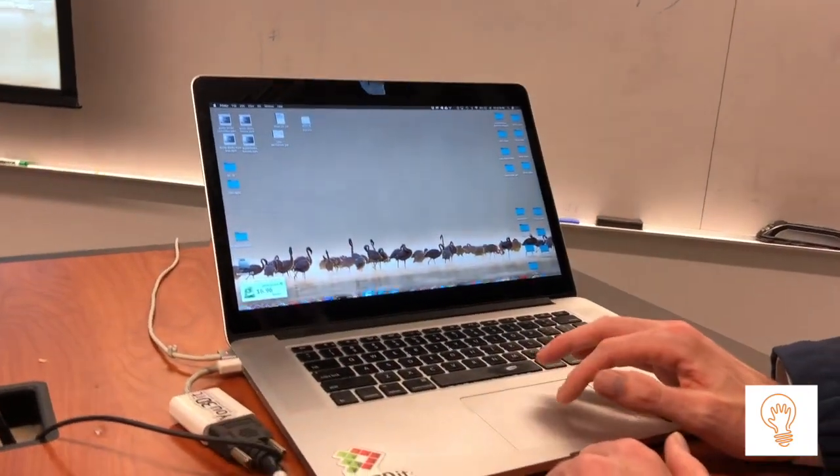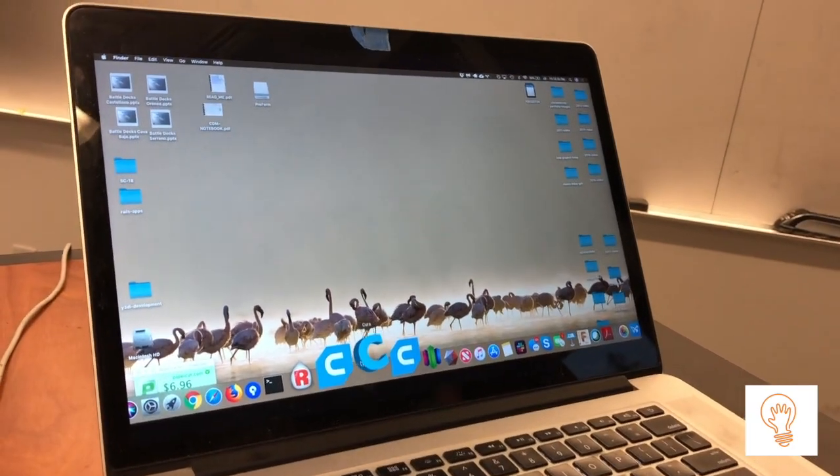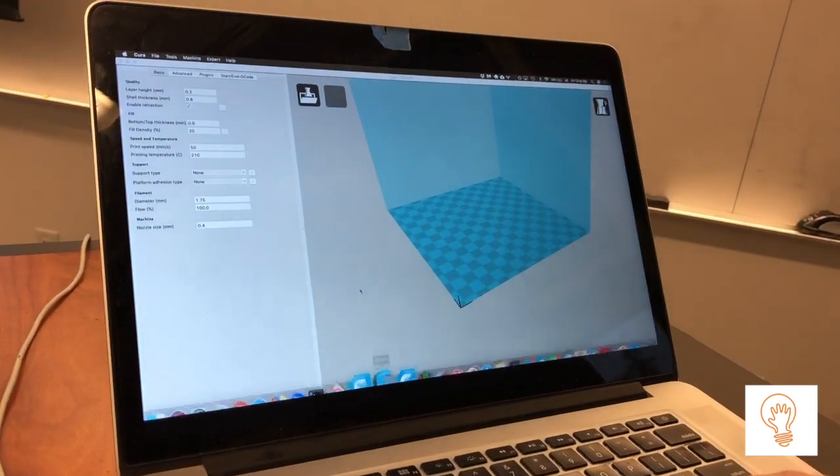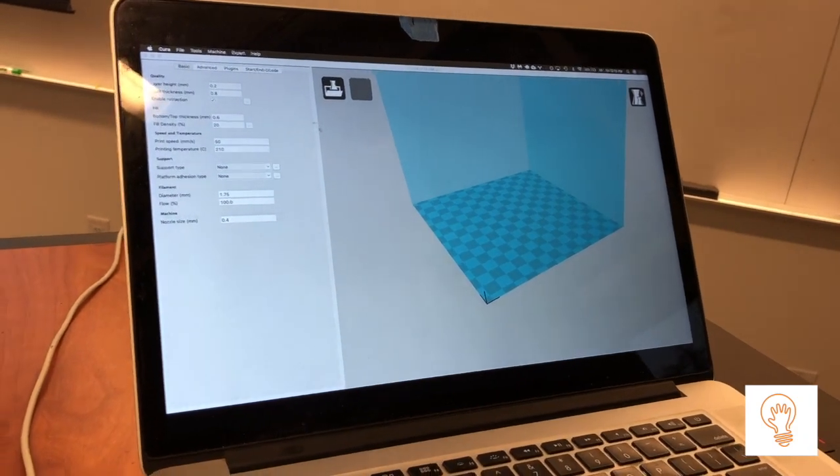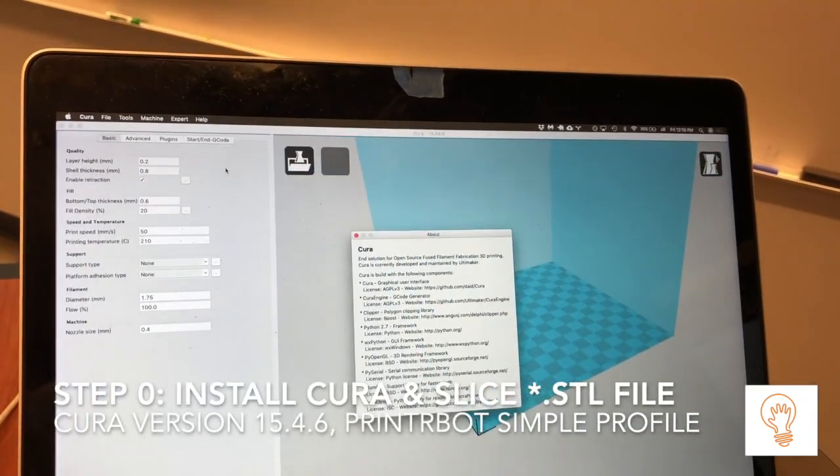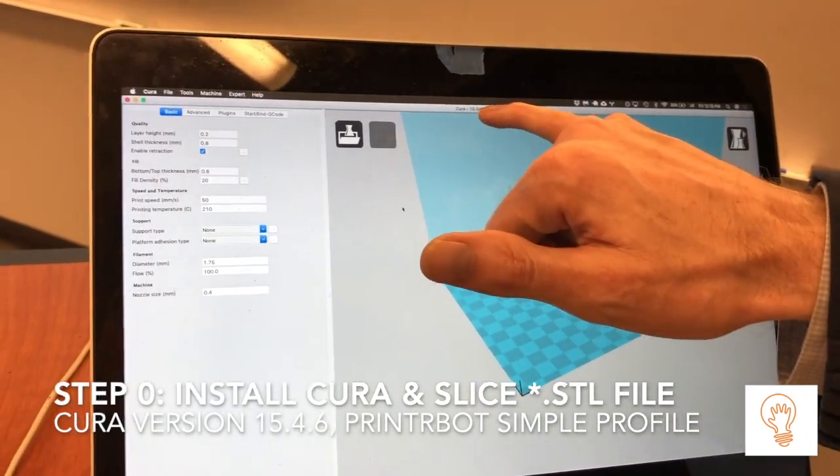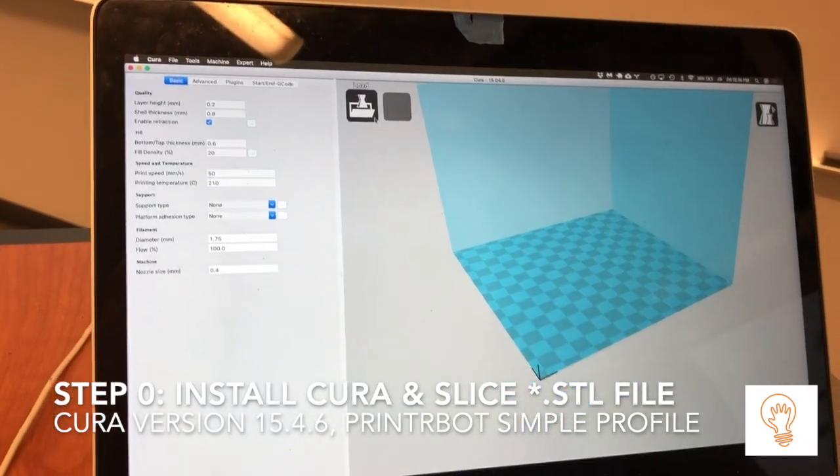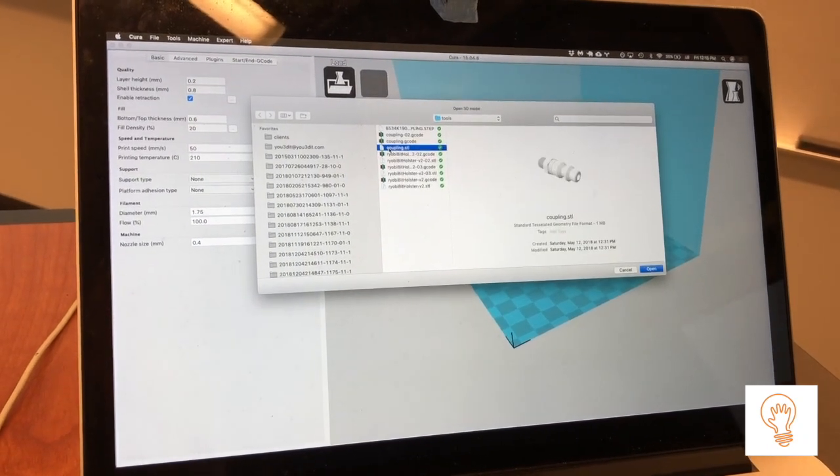We're going to go to my SD card and computer now and put a part onto Cura. There are multiple Curas you can download. I find the best one for the Printrbot 3D printers is Cura 15.4.6. We'll put that documentation in bCourses.